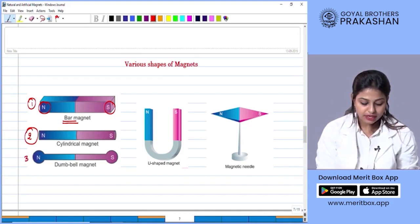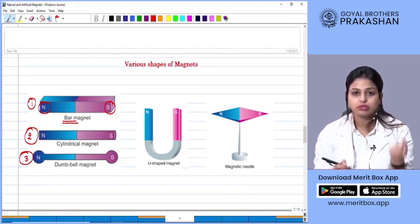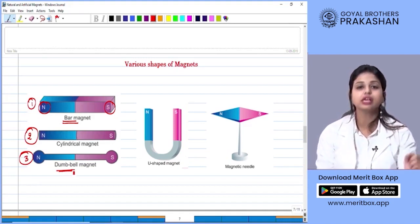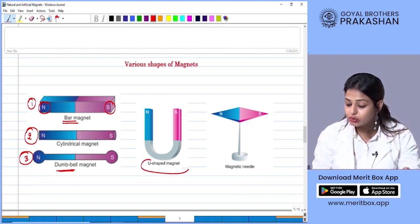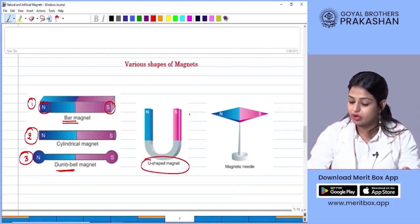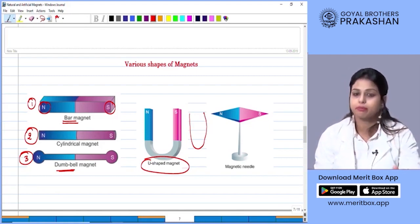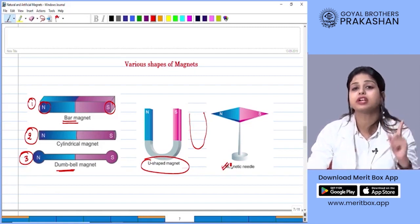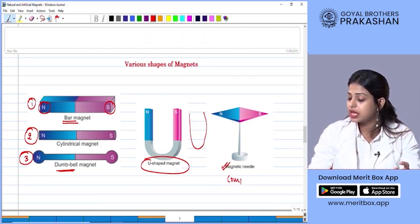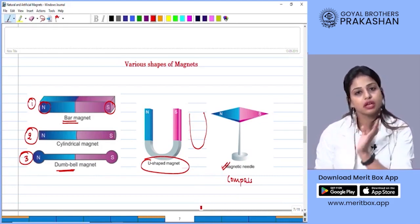The other magnet is a dumbbell shaped magnet. Now if you had seen those dumbbells that you use to exercise with, that's called the dumbbell shaped magnet. Another is a U shaped magnet. When your magnet is shaped in the letter U, you call it a U shaped magnet. And the last one that is used in a very special tool called the compass is the magnetic needle. It is used to show the direction in the tool called compass.